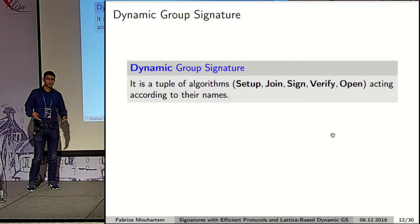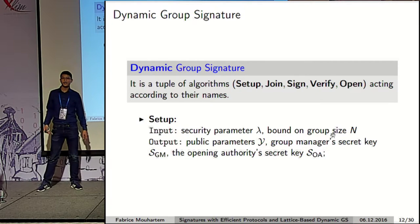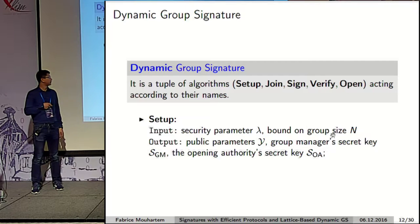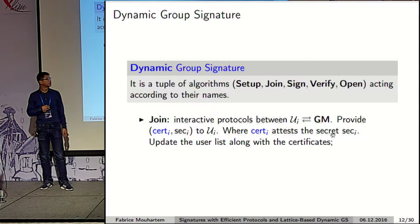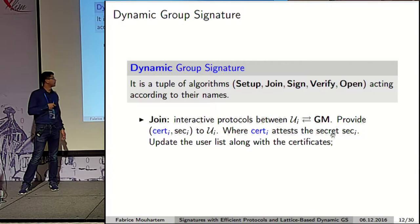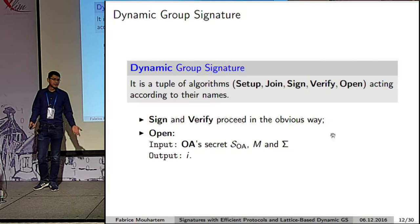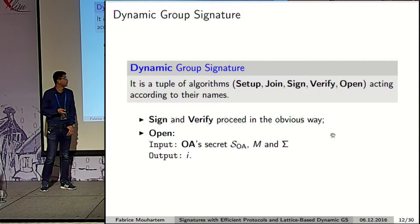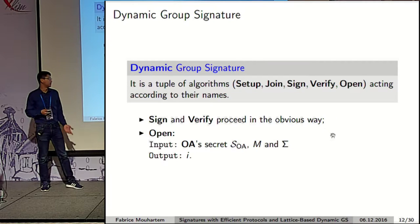For dynamic group signatures, more formally it is a tuple of five algorithms. The setup algorithm takes as input the security parameter and an upper bound on the group size, and outputs public parameters and two secret keys — one for the group manager and one for the opening authority. The join protocol is an interactive protocol between a user and the group manager, at the end of which the user gets a public membership certificate attesting to secrets only he knows. We also have sign and verify algorithms, where the verify algorithm takes as input the group public key. And there is the open algorithm, which given the opening authority's secret and a signature, outputs the identity of the user who signed it.